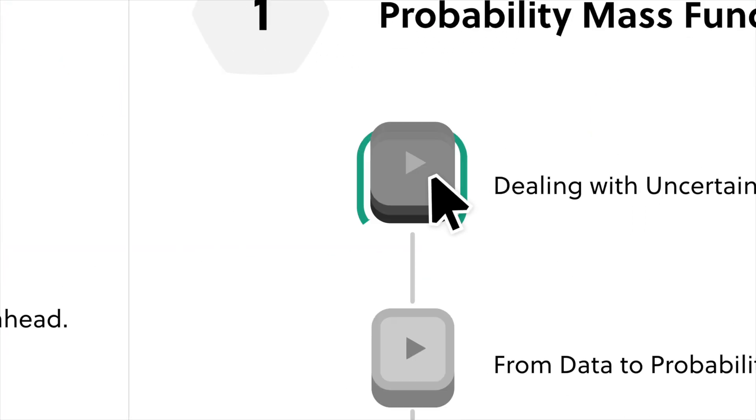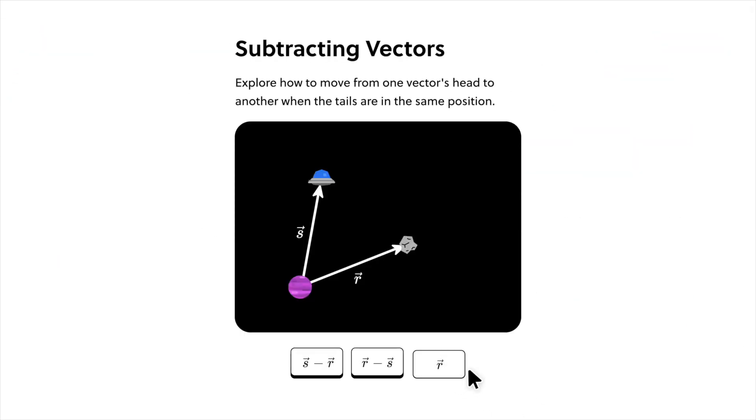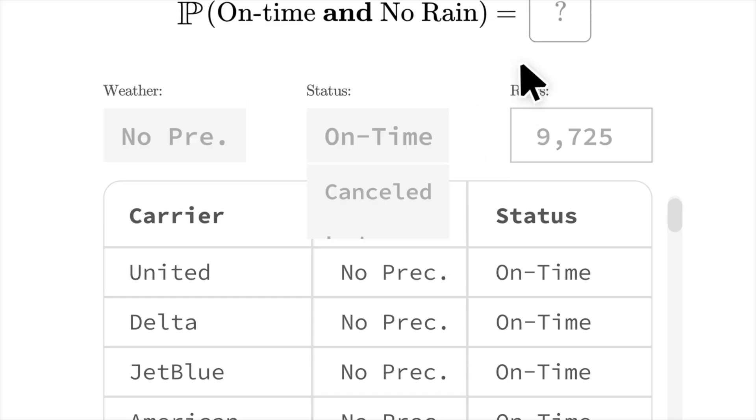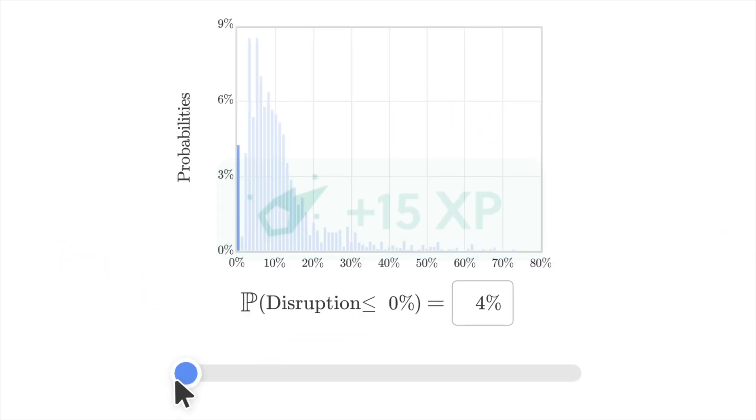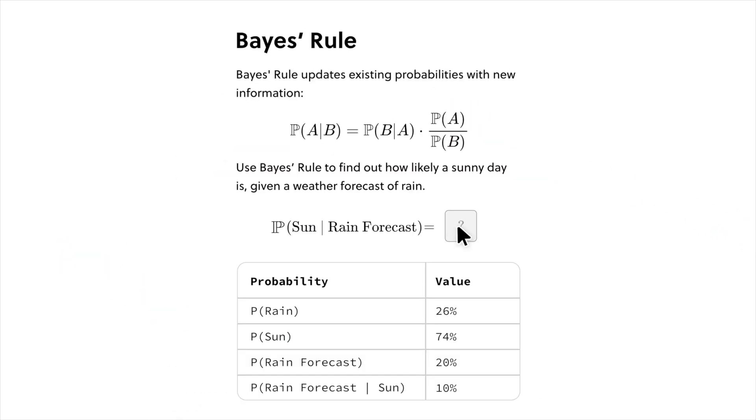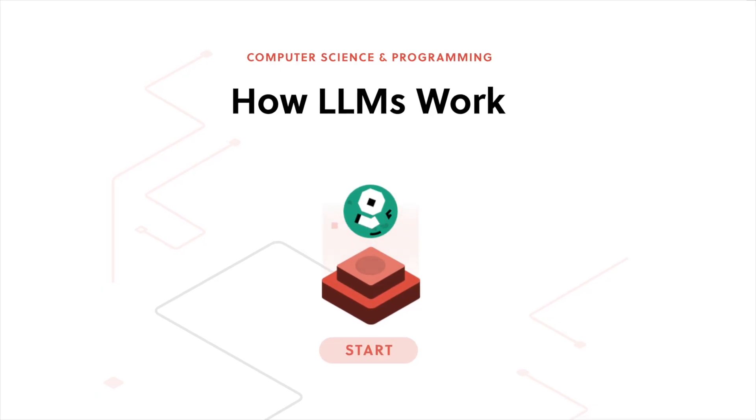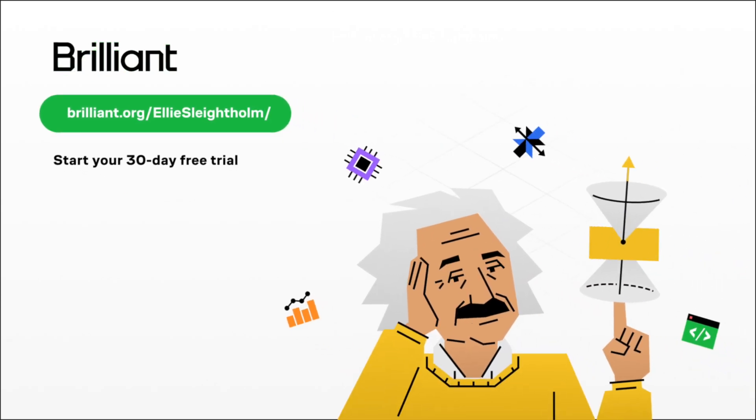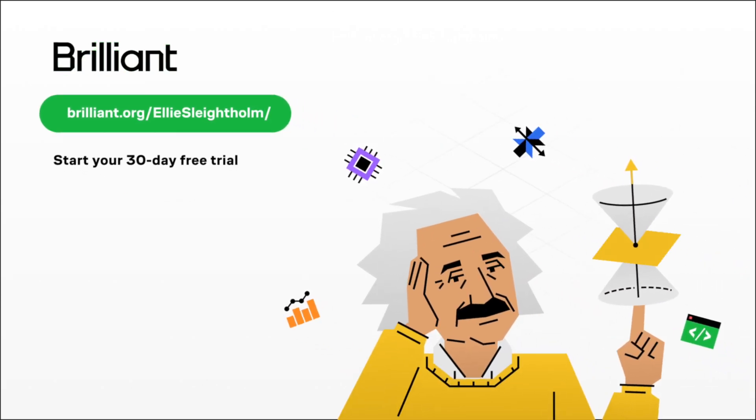Today's video covers a specific area of pure mathematics. Despite being an applied mathematician myself, I love pure mathematics. If you're interested in learning more about pure or applied mathematics, statistics, or machine learning, I'd highly recommend checking out Brilliant.org. Brilliant has hundreds of courses covering a range of STEM subjects with hands-on problem solving — proven to be six times more effective than simply watching lectures. Visit brilliant.org/ellieslighthome for a free 30-day trial and 20% off an annual premium subscription.